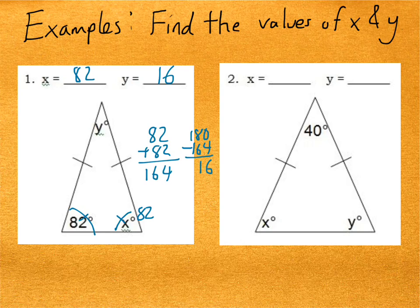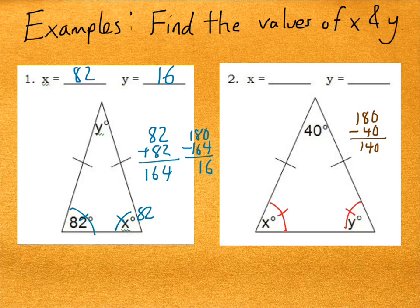What about the other example? Once again, the base angles are congruent, so the values of x and y are going to be the same. The triangle still has to have angles that add to 180, so if I subtract the 40 degrees from 180, I'm left with 140 degrees. That 140 degrees must be split between x and y, and because they're congruent it must be split evenly. So if I divide 140 by 2, that gives me 70. Both x and y are 70 degrees.